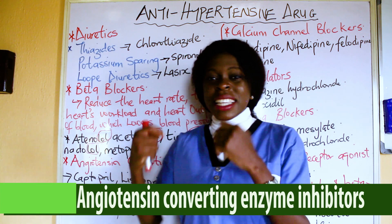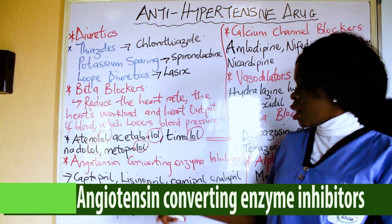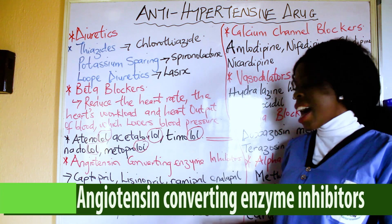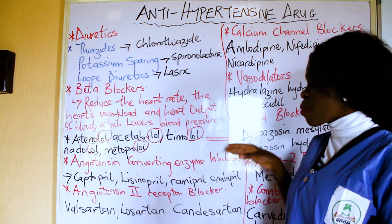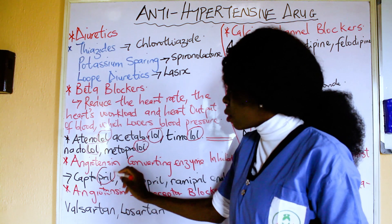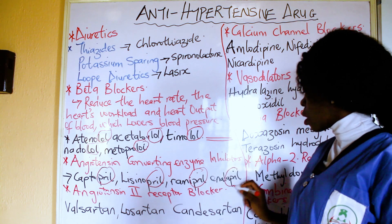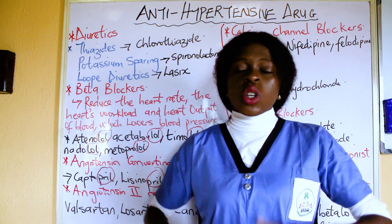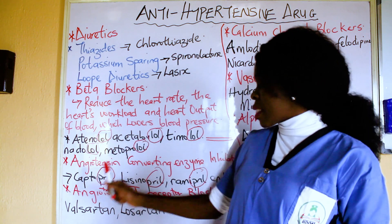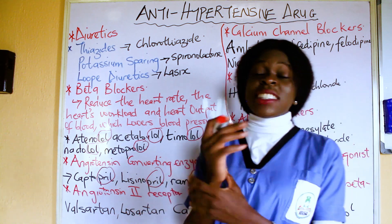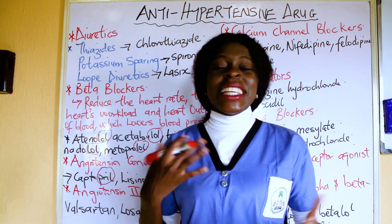Examples of angiotensin-converting enzyme inhibitors are captopril, lisinopril, ramipril, and enalapril. All angiotensin-converting enzyme inhibitors end with '-pril'. The side effects associated with ACE inhibitors are dry skin, skin rash, dry cough, and sometimes it can lead to kidney damage.